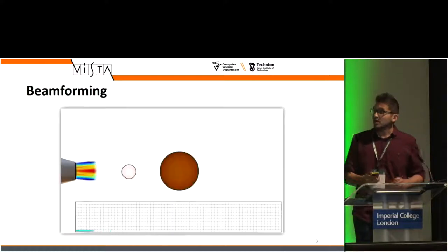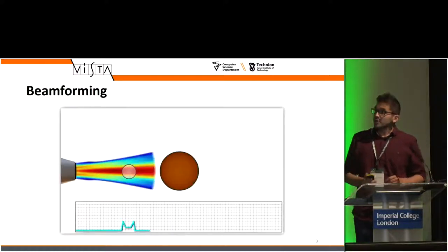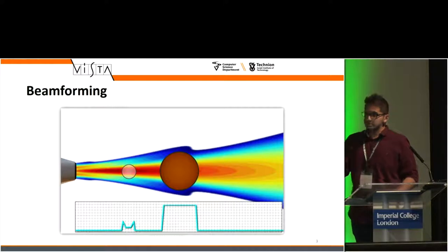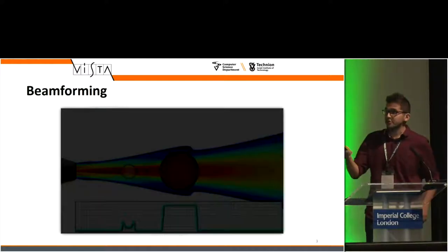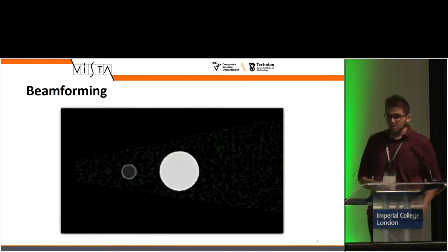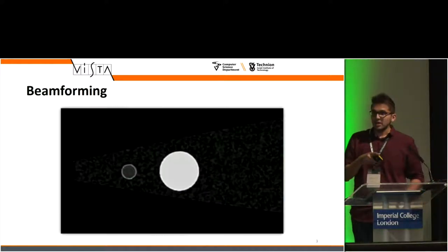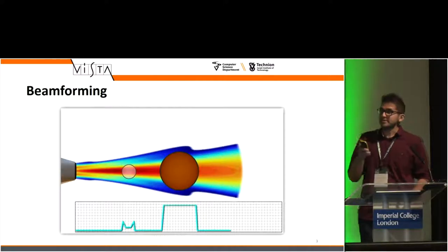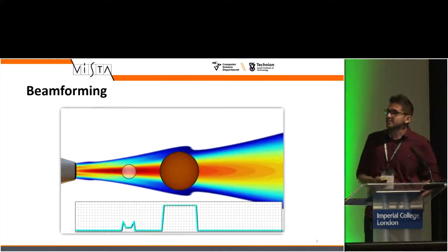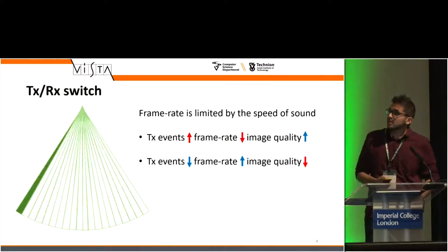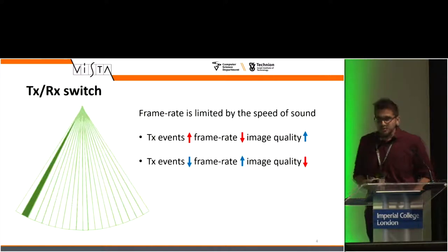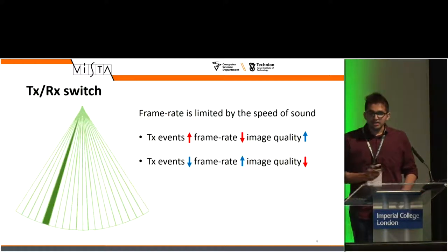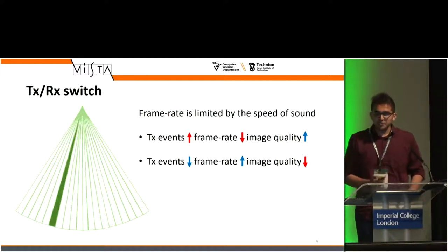For example, if you look at this video, the red region is where the wave is focused. If you see the signal received at the bottom, it spikes only when there's an object that hits it. In ultrasound imaging, we always have this transmit and receive switch.